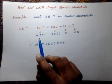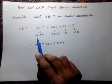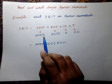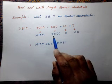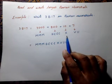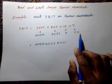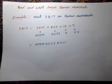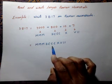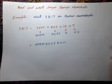Now write the Roman values of each: 3000 as MMM, 800 as DCCC, 10 as X, and 7 as VII. Combining these gives us MMMDCCCXVII. This way we can get our result.